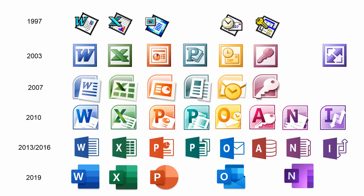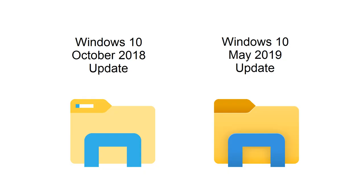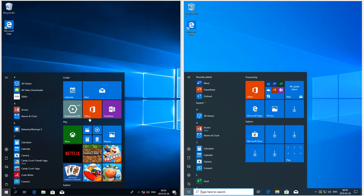In Windows 10 May 2019 update the Office logos have been updated, and the File Explorer icon has also been updated. The default start menu layout has also been updated.